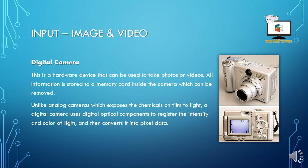Image and video input. Digital cameras are a hardware device used to take photos or videos, and all the information is stored on a special memory card inside the camera. This memory card can be removed and placed in your computer if you have the necessary socket, or placed in a memory card reader with an adapter. Unlike analog cameras, which expose chemicals on film to light, a digital camera uses digital optical components to register the intensity and color of light and then converts it into pixel data, which is compiled into a single image.